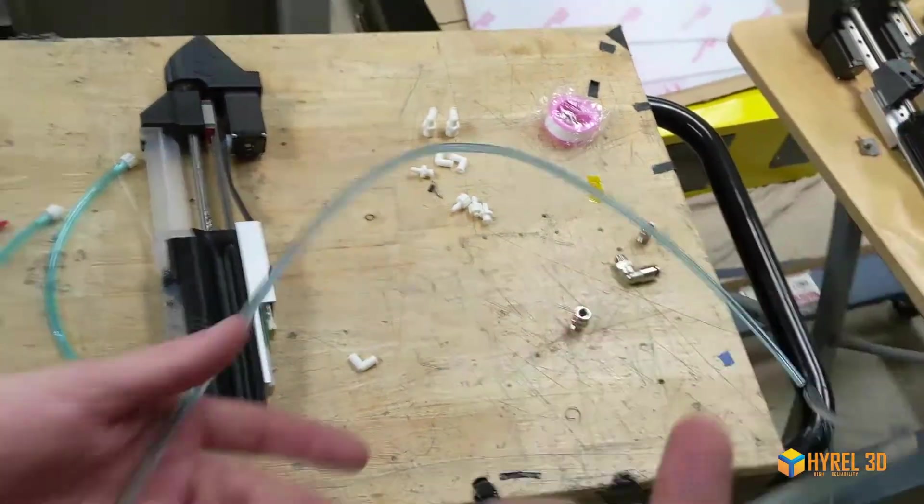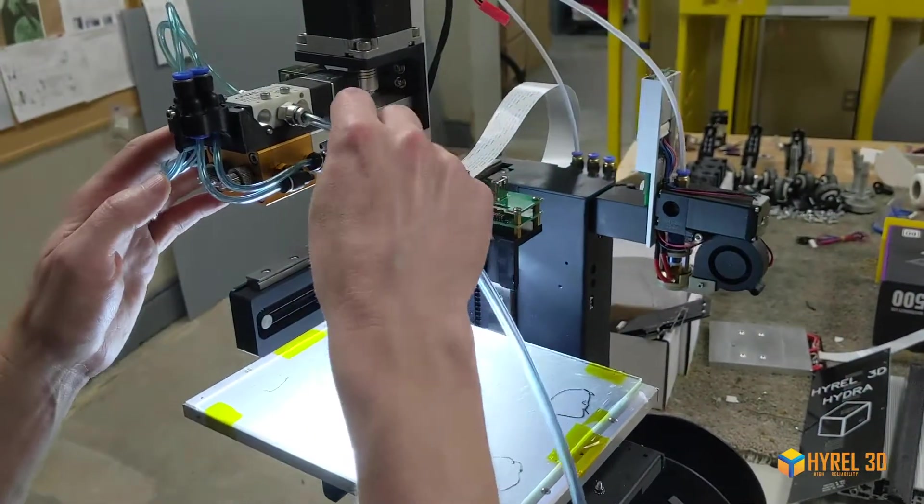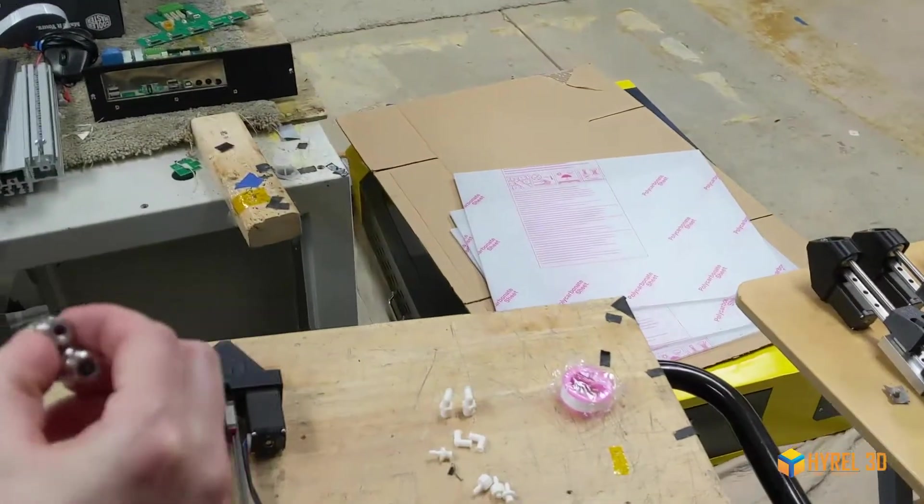You'll need a source for compressed air to actuate the valves. By default we use a quarter inch tubing but you can swap this out for other sizes.